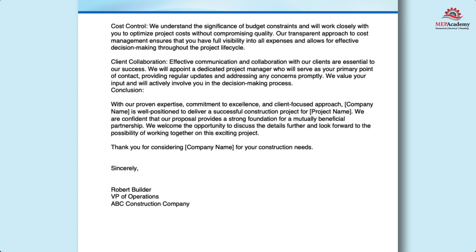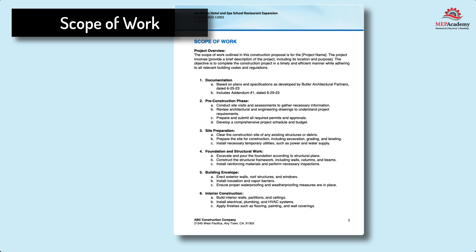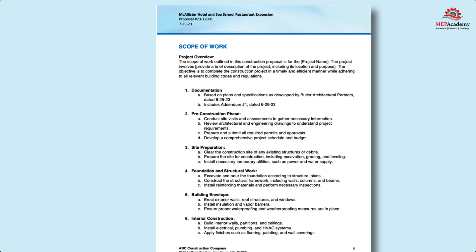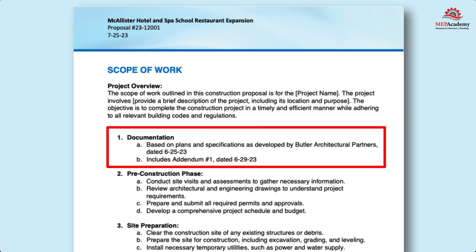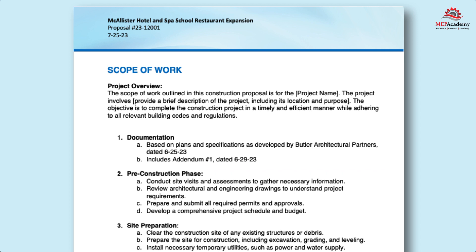The Scope of Work section provides a detailed scope of work. Start by inserting the project name and a brief description of the project, including the location. The scope of work can be customized for any trade — just enter the scope you are bidding on and describe the main items of work. Keep the first description to identify the documentation you are bidding on, providing a reference for which set of documents and their dates your proposal is based on. Then identify all the major portions of your scope of work, which informs the recipient that you understand the specific project requirements.